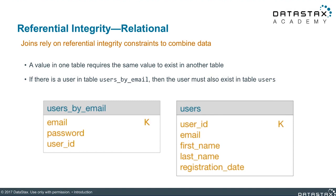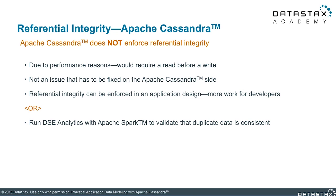Now let's look at one last difference between Cassandra and relational data modeling having to do with joins and transactions. One motivation for using transactions in relational data modeling is so that writes can be coordinated to multiple tables. In the example shown, we want to ensure that when we add a record to the users table, there's also an entry in the users_by_email table and vice versa — referential integrity such that a user is represented in both tables or neither. This referential integrity is required for a join to work properly. In Cassandra, this referential integrity is not guaranteed by the database; instead, we have to enforce it at the application level, because it would require a read before write, which could lead to performance issues.